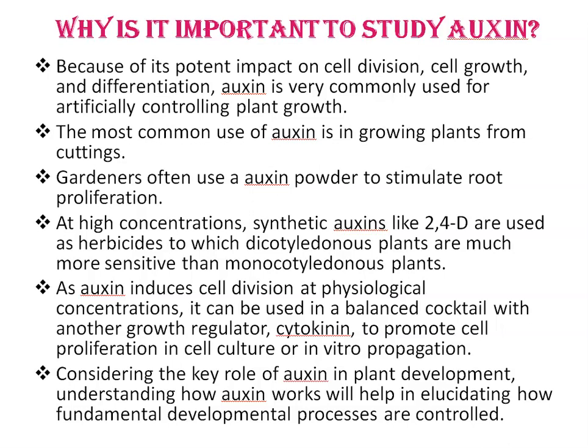Why is it important to study auxin? Because of its potent impact on cell division, cell growth, and differentiation, auxin is very commonly used for artificially controlling plant growth. The most common use of auxin is in growing plants from cuttings. Gardeners often use auxin powder to stimulate root proliferation. At high concentration, synthetic auxin like 2,4-D is used as a herbicide, through which dicotyledonous plants are much more sensitive than monocotyledonous plants. Auxin can also be used in a balanced cocktail with cytokinin to promote cell proliferation in cell culture or in vitro propagation.